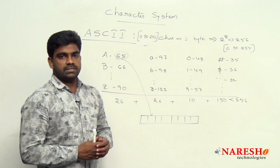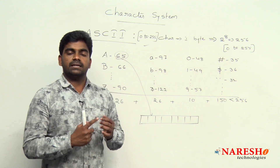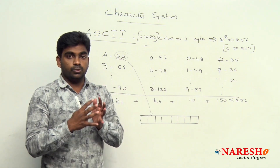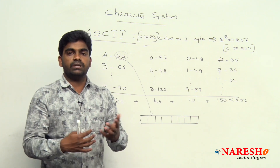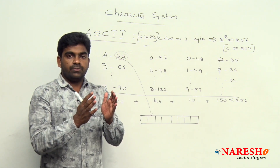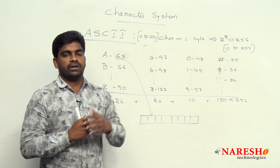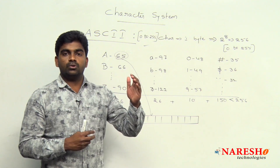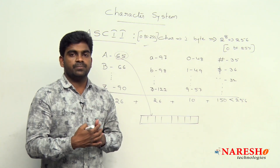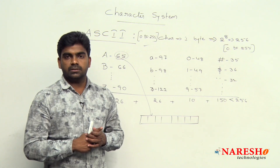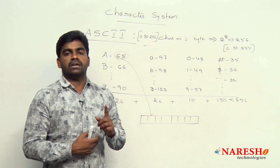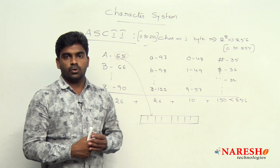So this is the representation of character system. Character system means all the symbols of one language are represented using constant integer values between 0 to 255. Any value between 0 to 255 can be stored using 1 byte memory. That is the reason ASCII character size is 1 byte, and that is also why character occupies 1 byte memory in C and C++ languages. Hope you understood.